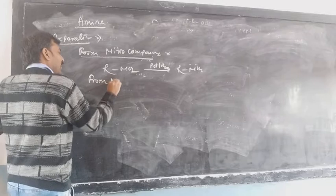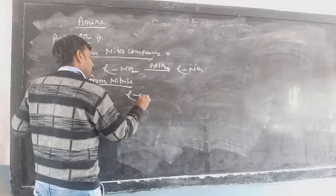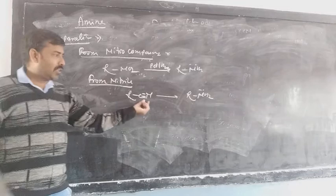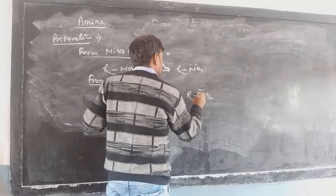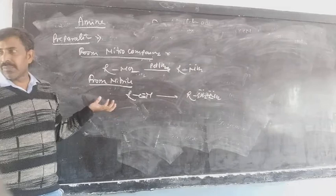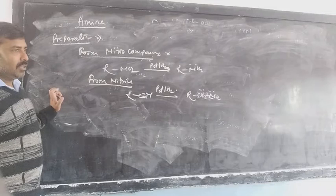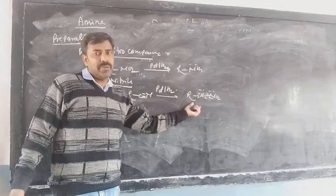From nitrile: this is R-CN, and you will convert it by reduction. The CN group has to convert to CH2-NH2. Again, addition of hydrogen is taking place, so there must be a reducing agent. We treat with palladium and hydrogen — a mild reducing agent — to convert nitrile to primary amine, giving R-CH2-NH2.